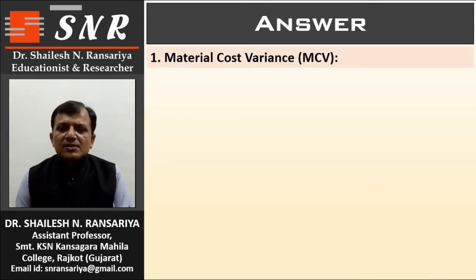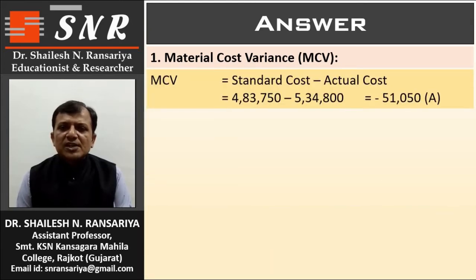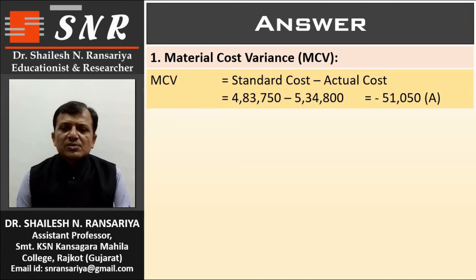First, Material Cost Variance. MCV = Standard Cost − Actual Cost = 4,83,750 − 5,34,800. So MCV = −51,050 adverse.